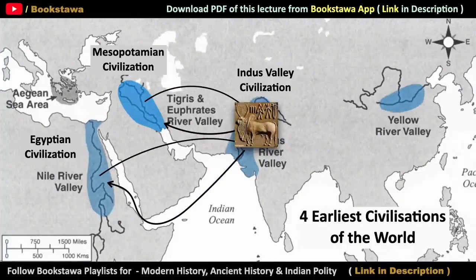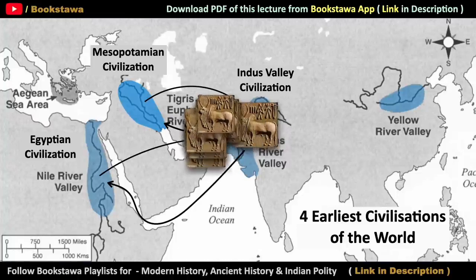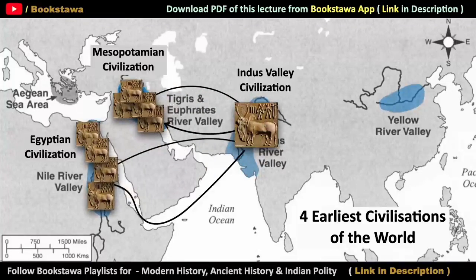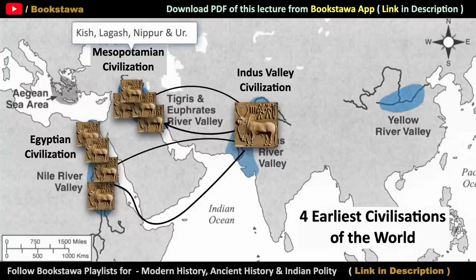The seals that belong to the Indus Valley Civilization have also been found in large quantities in the Mesopotamian Civilizations and the Egyptian Civilization, especially at the sites of Kish, Lagash, Nippur and Ur in the Mesopotamian Civilization.